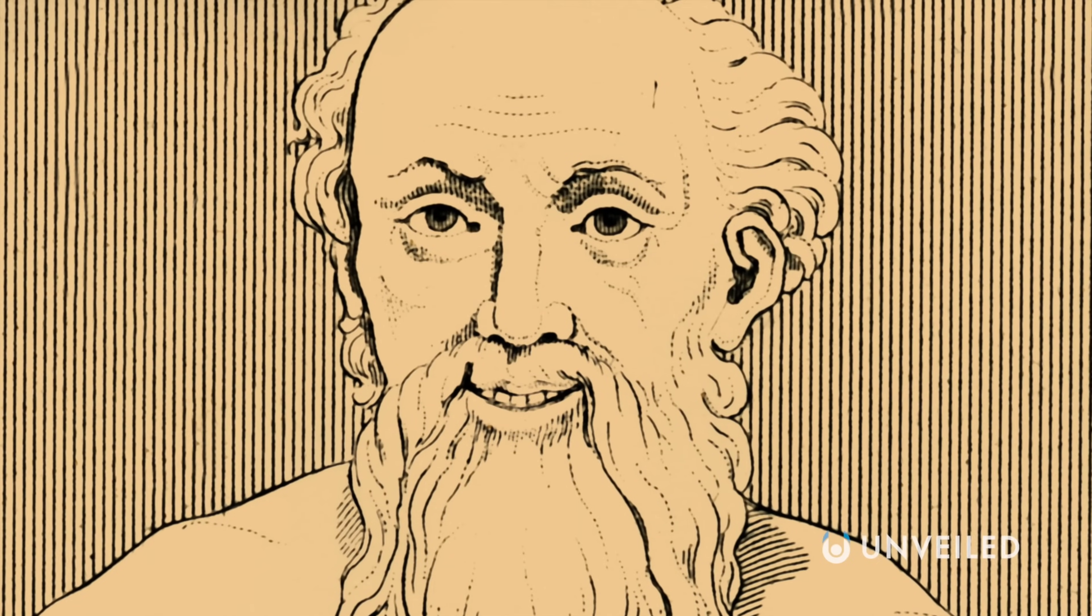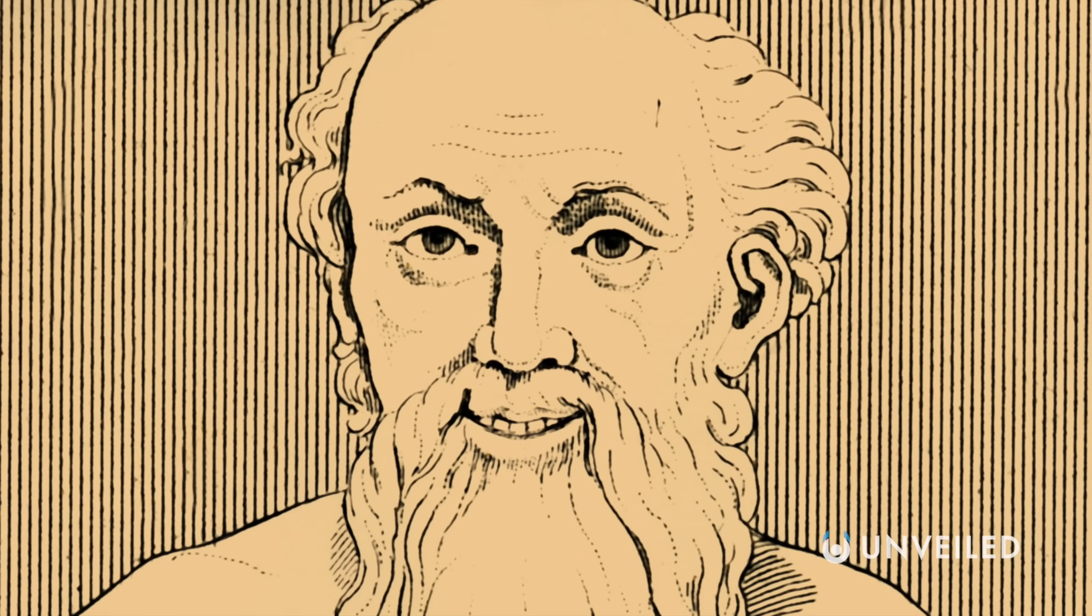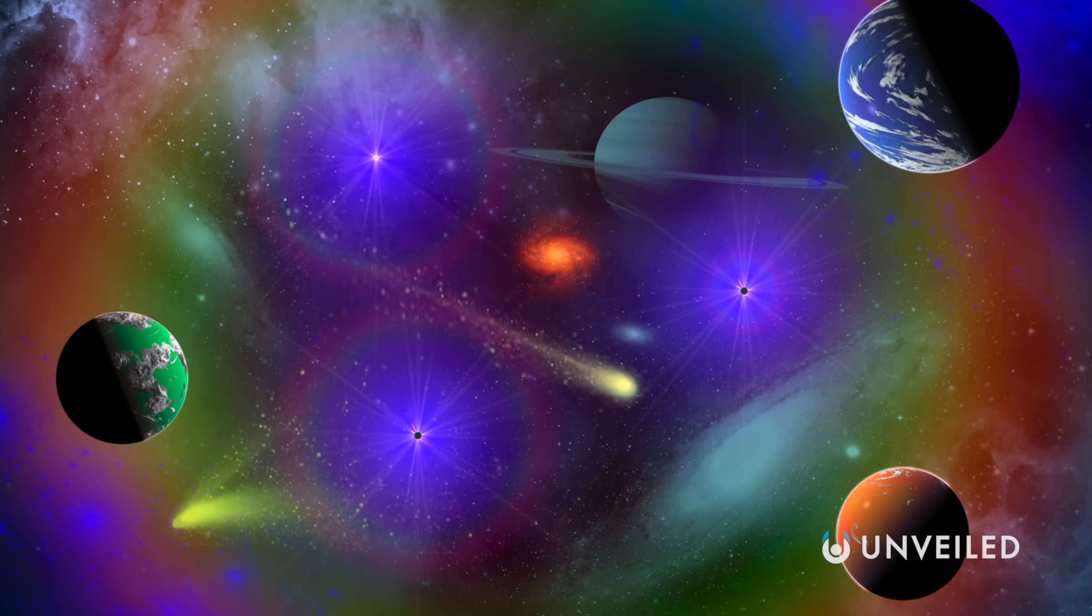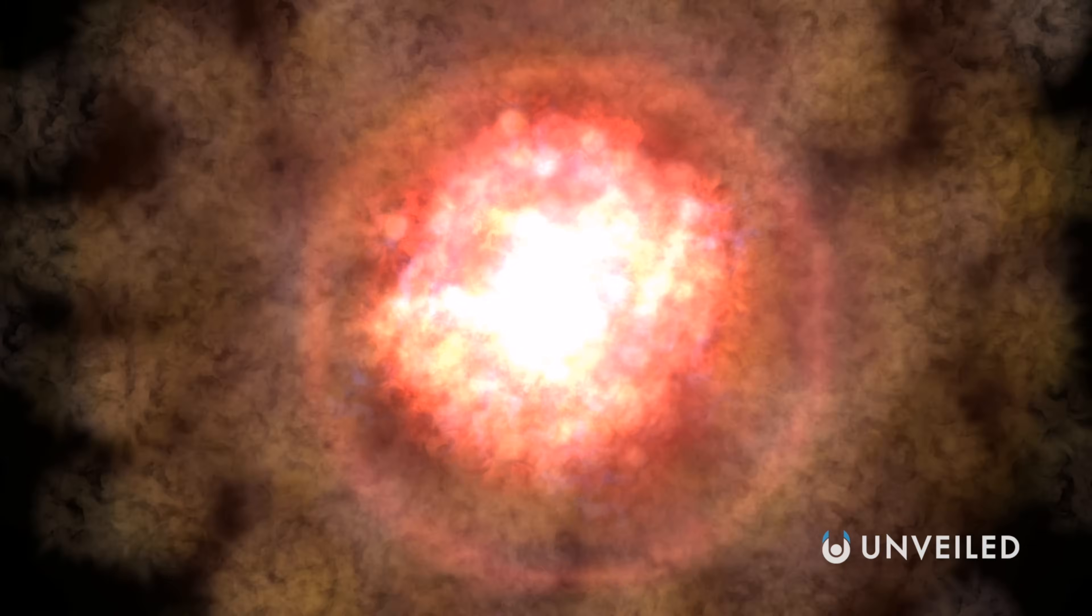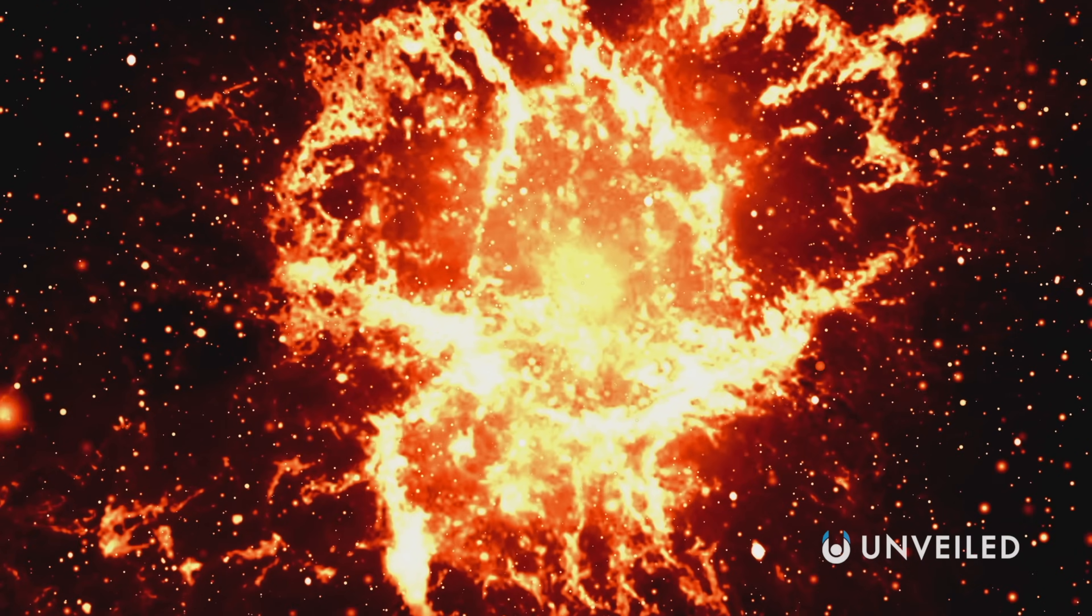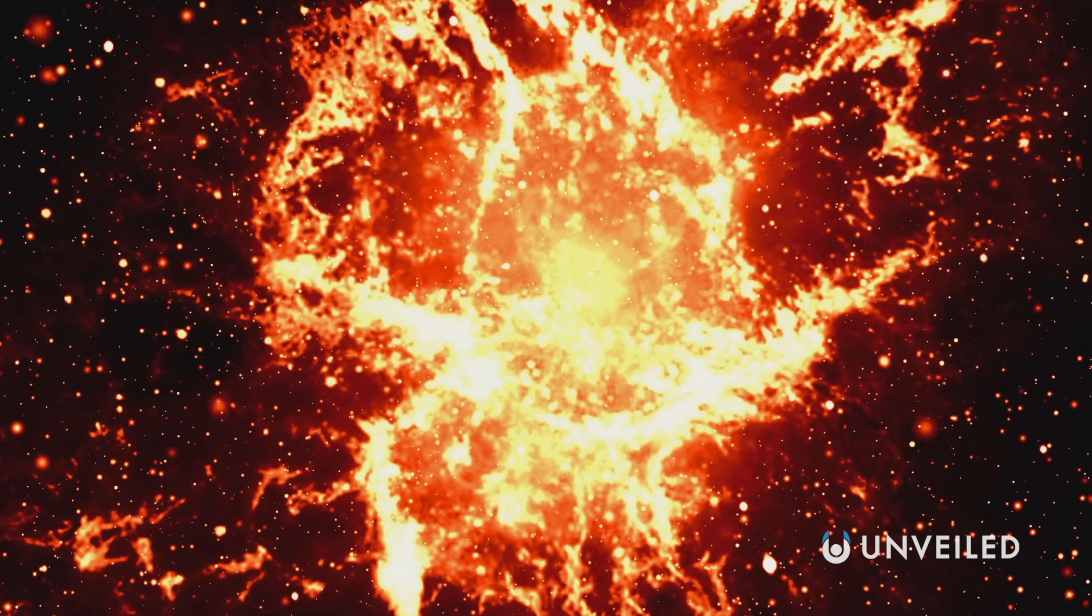Democritus, in particular, believed that a vast variety of worlds were out there, in different states of formation or dissolution, some of which could support life and others not. It was one of the first truly paradigm shifting takes on the structure of the universe and one of the earliest forerunners for multiverse theory.